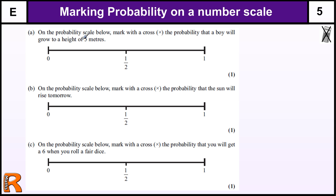So probably the boy will grow to a height of five metres. Five metres — if you take roughly a metre to be three feet, that's actually 15 feet tall. As far as I'm aware, nobody's growing taller than eight foot 11 and three quarters. So there is a zero probability of a boy being five metres tall.